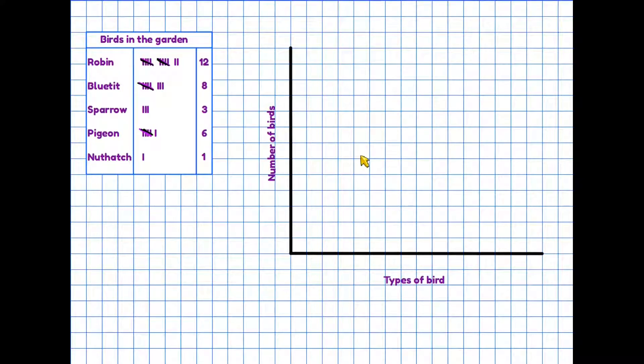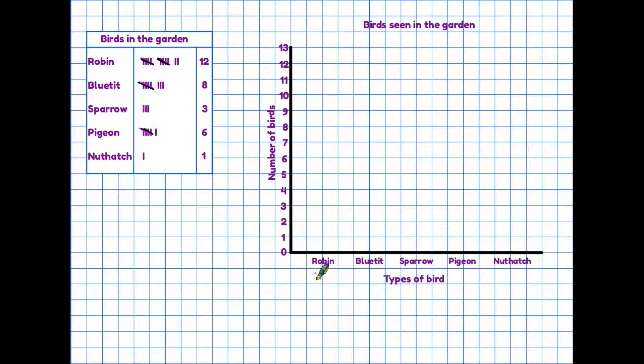Now we have first added the names of the birds along the bottom and on the side a scale of numbers which will allow us to record the number of each of the birds. Also we have put a title at the top. So all these elements are vital for making an accurate bar chart.